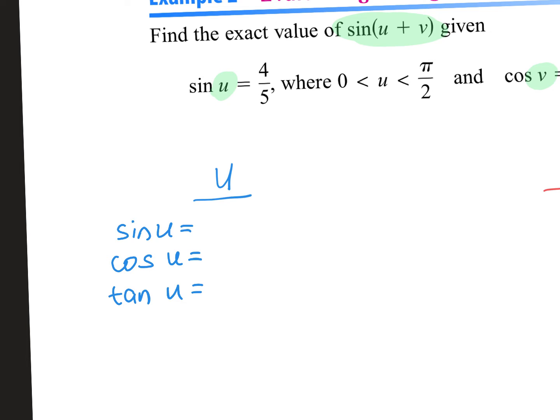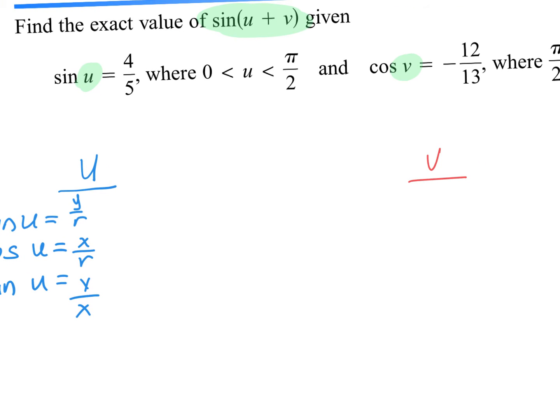Sine, remember, is Y over R. Cosine is X over R. And tangent is Y over X. So write that down. Same thing over here for V. The sine of V is going to be Y over R. Cosine of V is X over R. And tangent of V is Y over X.